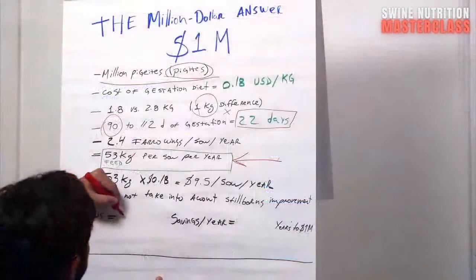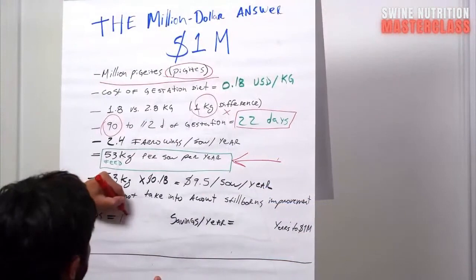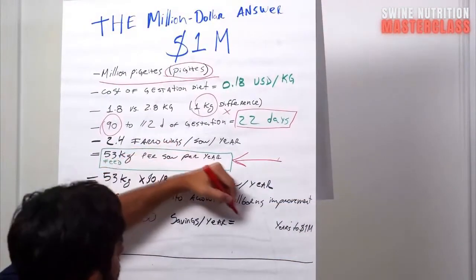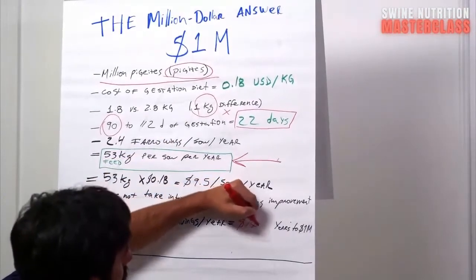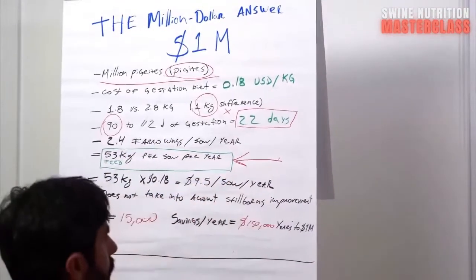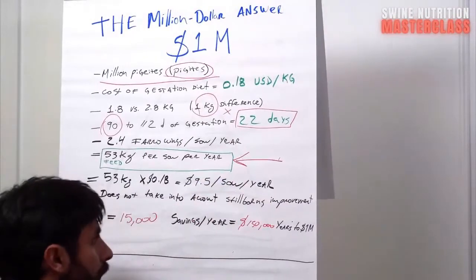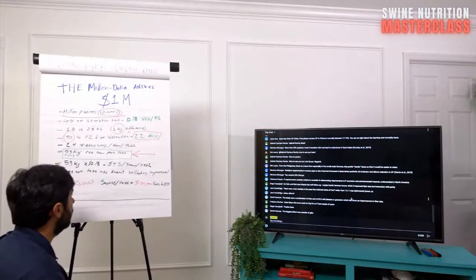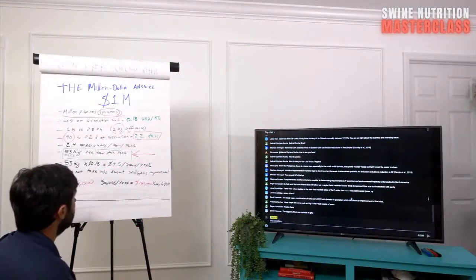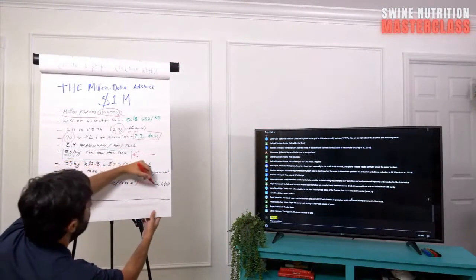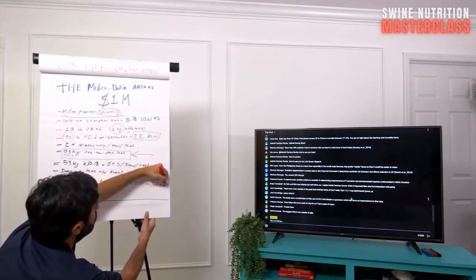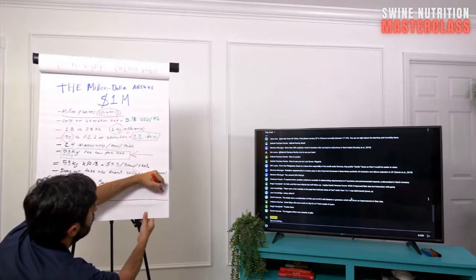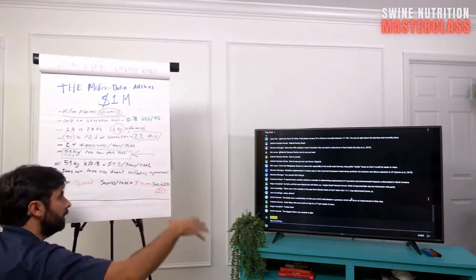So let's say if you have 15,000 sows, just to get a smaller producer, the savings will be $150,000 per year. And that's good, right? That's already paid the salary of the nutritionist. So that's good. The producer will be happy. And then how many years to reach that $1 million? It's probably around seven years, right? Seven years. So because these savings are going to be every year.